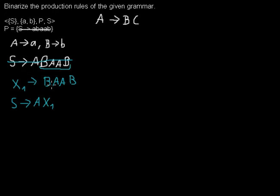So now I will take again everything that's after this B and add a new non-terminal. I name it X2. This goes to A, A, B.